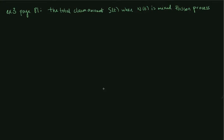We consider the total claim amount under the condition that the claim number process is a mixed Poisson process. We want to find the mean value of S at a given time and the variance of S at a given time.